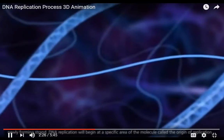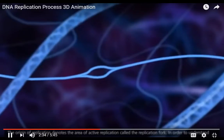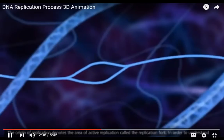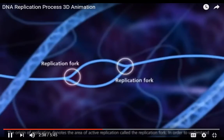DNA replication will begin at a specific area of the molecule called the origin of replication. The origin of replication denotes the area of active replication called the replication fork.